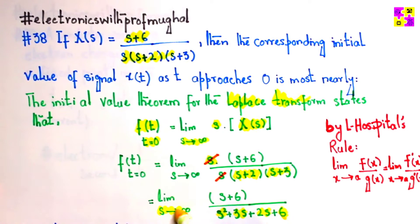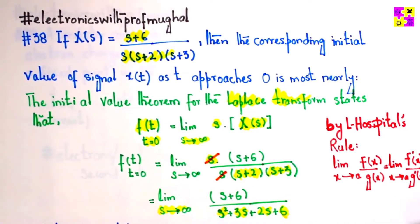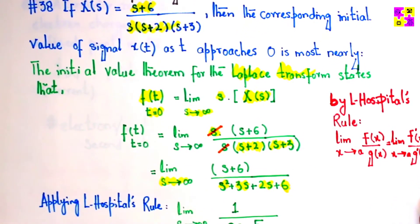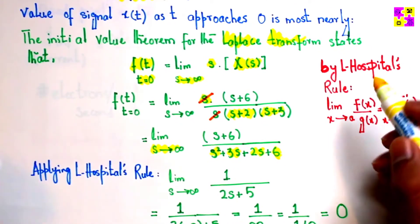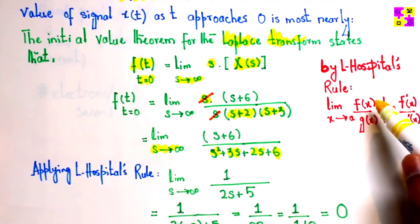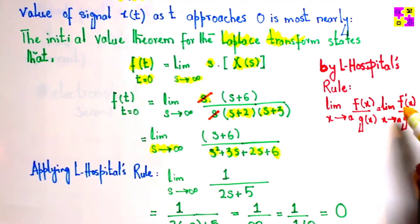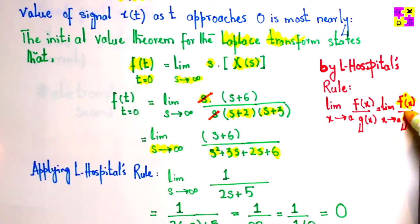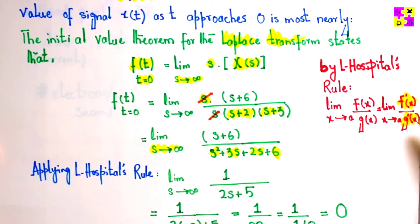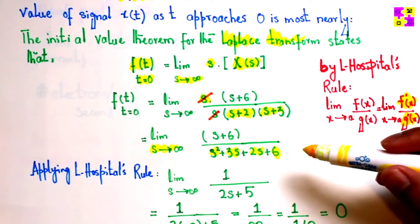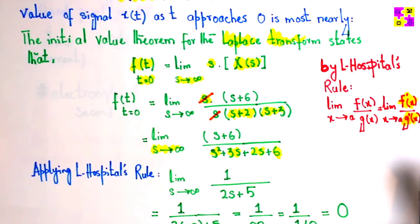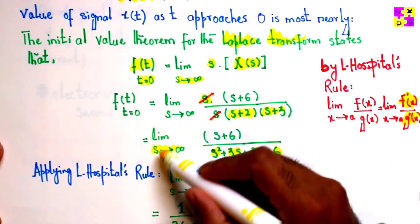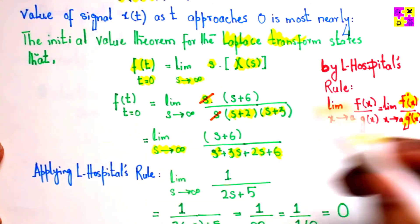Once we get here, we can now apply L'Hospital's rule. What does L'Hospital's rule state? Well, it states that whatever function you have is equivalent to the derivative of that. We need to take that derivative because we need to get the function into a transformation where we can apply the limit as s tends to infinity.